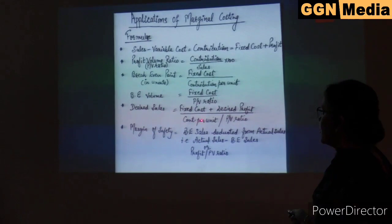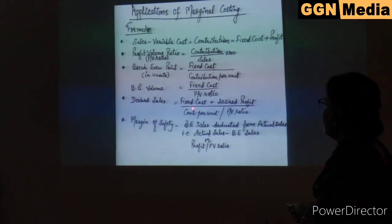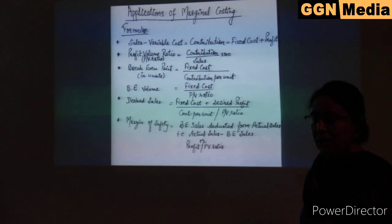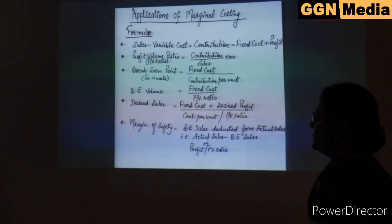To calculate the number of units to be sold for a desired profit, it is fixed cost plus desired profit divided by contribution per unit. The next concept is margin of safety, which is simply the difference between actual sales and break-even sales, or it can be calculated as profit divided by PV ratio.